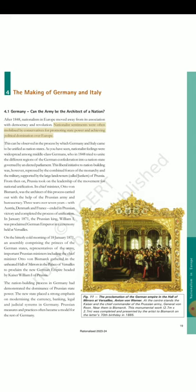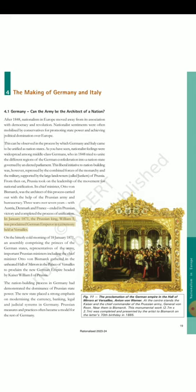Section 4: The Making of Germany and Italy. Section 4.1: Germany — can the army be the architect of a nation? After 1848, nationalism in Europe moved away from its association with democracy and revolution. Nationalist sentiments were often mobilized by conservatives for promoting state power and achieving political domination over Europe. This can be observed in the process by which Germany and Italy came to be unified as nation states. Nationalist feelings were widespread among middle-class Germans, who in 1848 tried to unite the different regions of the German Confederation into a nation-state governed by an elected parliament. This liberal initiative to nation-building was, however, repressed by the combined forces of the monarchy and the military, supported by the large landowners, called Junkers, of Prussia. From then on, Prussia took on the leadership of the movement for national unification. Its chief minister, Otto von Bismarck, was the architect of this process carried out with the help of the Prussian army and bureaucracy. Three wars over seven years — with Austria, Denmark and France — ended in Prussian victory and completed the process of unification. In January 1871, the Prussian king, William I, was proclaimed German Emperor in a ceremony held at Versailles. On the bitterly cold morning of the 18th of January 1871, an assembly comprising the princes of the German states, representatives of the army, and important Prussian ministers including the chief minister Otto von Bismarck gathered in the unheated Hall of Mirrors in the Palace of Versailles to proclaim the new German Empire headed by Kaiser William I of Prussia. The nation-building process in Germany had demonstrated the dominance of Prussian state power. The new state placed a strong emphasis on modernizing the currency, banking, legal and judicial systems in Germany. Prussian measures and practices often became a model for the rest of Germany.